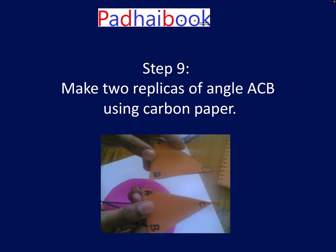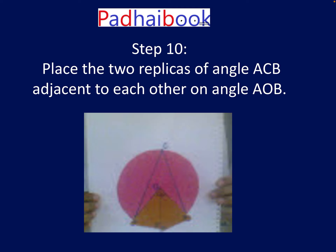Next, we are going to use carbon paper to make two replicas of angle ACB. After making the two replicas, we place them on angle AOB. You can see that the two replicas have been pasted on angle AOB and they fit exactly into each other on angle AOB.